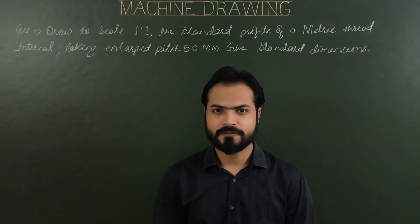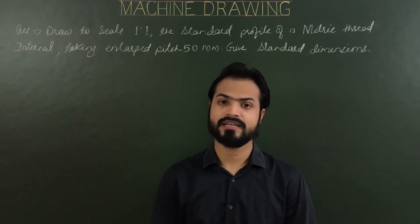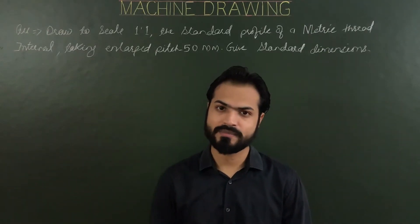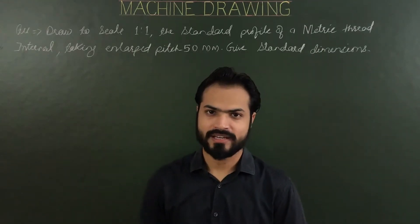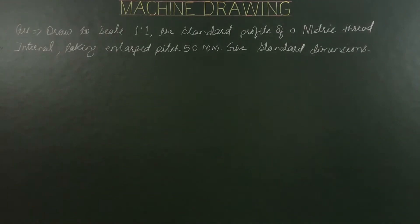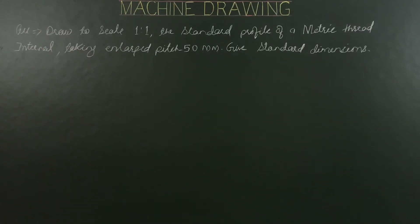Hello everyone. After square, knuckle, BSW and metric external thread, today's topic is metric internal. Let's begin with the problem. Draw to scale 1 is to 1 the standard profile of a metric thread internal, taking a large pitch as 50mm, with standard dimensions.